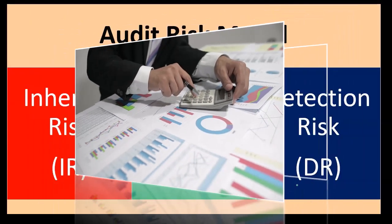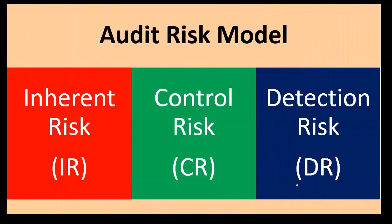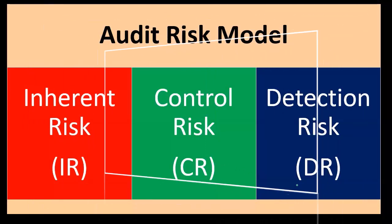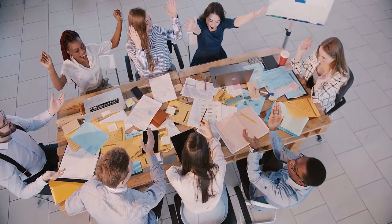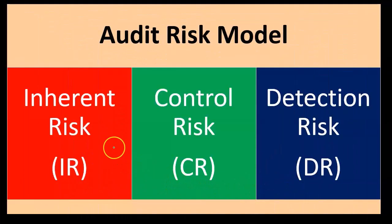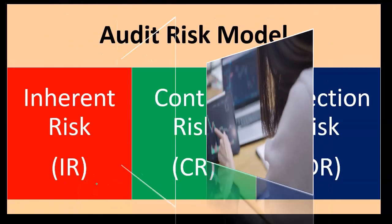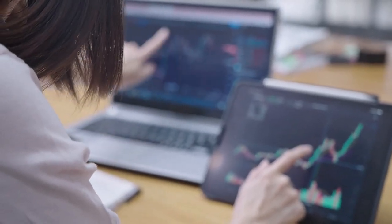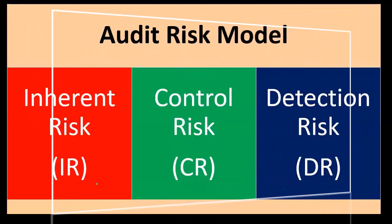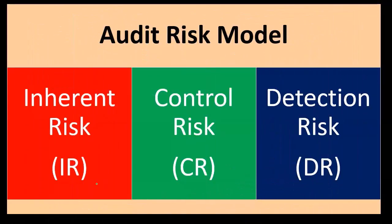The audit risk model includes key definitions: inherent risk (IR), control risk (CR), and detection risk (DR). We're going to put this information into a formulaic format. Note that this is more of an art and a science as opposed to just a science — it's not necessarily the case that every auditor would come up with the exact same number. The formula helps us conceptualize the interplay between these concepts.